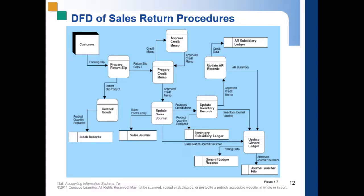In cases where specific authorization is required — where the amount of return or circumstances surrounding the return exceed the sales employee's general authority to approve — the credit memo goes to the credit manager for approval. The credit memo is sent to the credit officer or credit manager to approve. The credit memo triggers a deduction in accounts receivable from the customer.